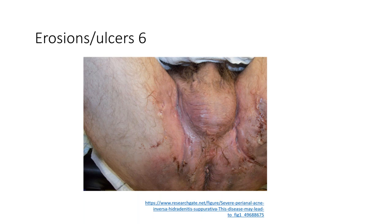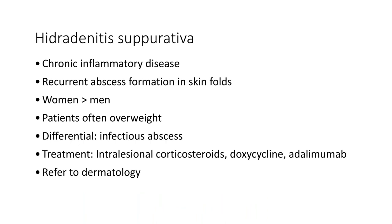An ulcerating, scarring, and uncomfortable condition affecting the inguinal folds, mons pubis, and perineal area — this is hidradenitis suppurativa, a chronic inflammatory disease with recurrent abscess formation in skin folds, occurring more in women than men and in patients who are overweight. The differential includes infectious causes. Treatment includes intralesional corticosteroids, doxycycline, and adalimumab (Humira), a biologic that has revolutionized care for these patients. Surgical treatment can also be considered. Refer to dermatology.